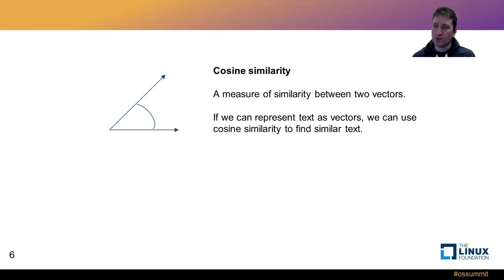So cosine similarity is a measure of similarity between two vectors. And if we can represent text as vectors, then we can use cosine similarity to find similar text. So in an example here, I am hungry as one sentence, and his name is John as two sentences. Cosine similarity allows us to measure the distance, the similarity between those two sentences. And we can then use OpenSearch's KNM plugin as a way to facilitate this.